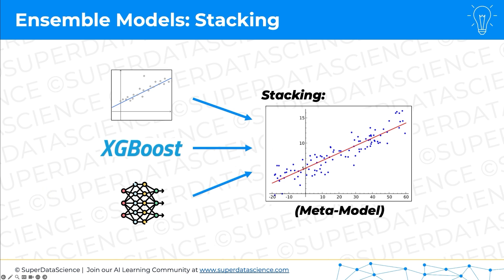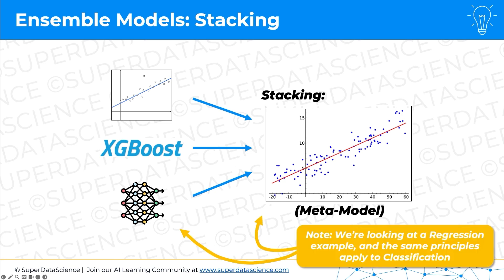This is a high-level overview, and now we're going to dive into this in a bit more depth. In this example we're dealing with a regression problem — we've got linear regression, XGBoost for regression, the neural network for regression, and the meta model is also a regression model, in this case a simple linear regression. The same principles apply to classification — you'd just use classification models. Also, there can be any number of base models of any kind, and the meta model can be any model you like.